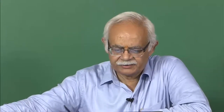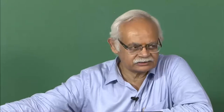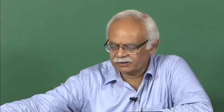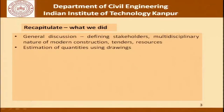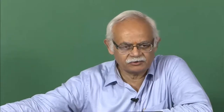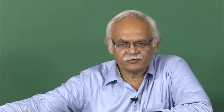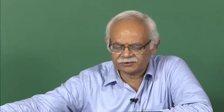Recapitulating what we did: we opened the discussion with a general discussion on defining stakeholders, emphasizing the multidisciplinary nature of modern construction. We went through the tendering process, the resources used in the construction industry — time, manpower, equipment, and money. Then we went on to do estimation of quantities using drawings, which gave us insight into the different items of work involved. We did a simple example of a boundary wall, and there was an example of a pipe rack as homework. Reading BOQs or schedule of rates shows how items have to be written.